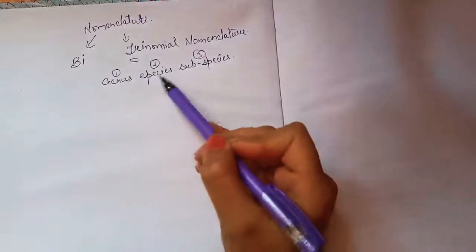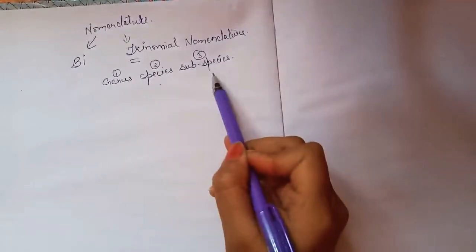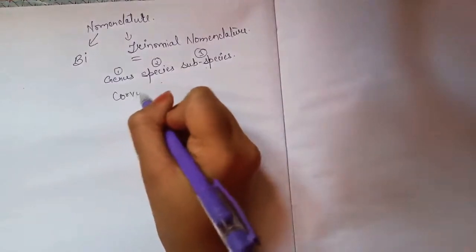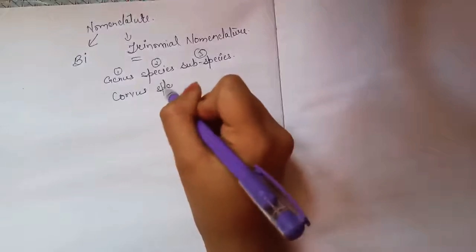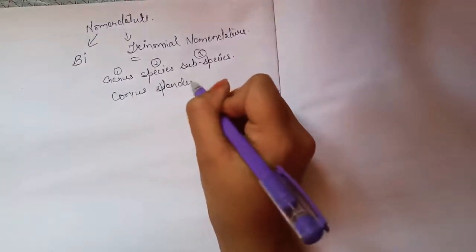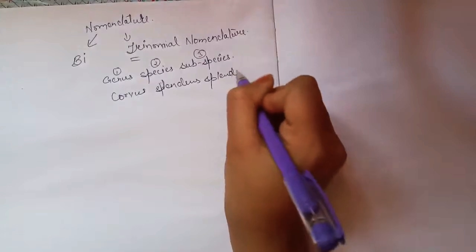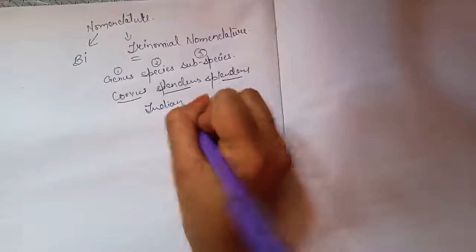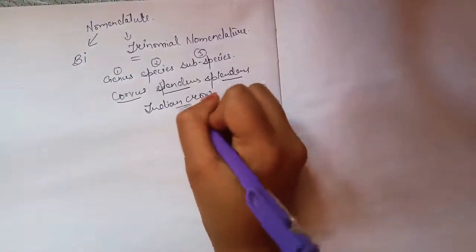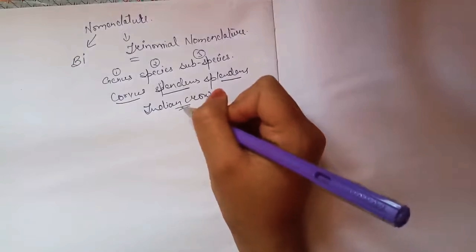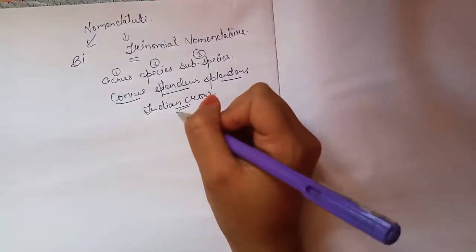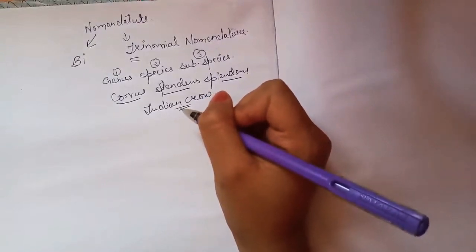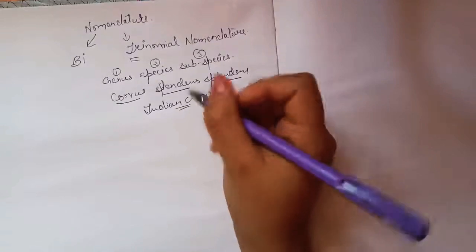So the first word represents the genus, the second word the species, and the third word the subspecies. For example, there is Corvus splendens, which is the scientific name of the Indian crow. In the previous video we already discussed the scientific name of humans, which is Homo sapiens sapiens.